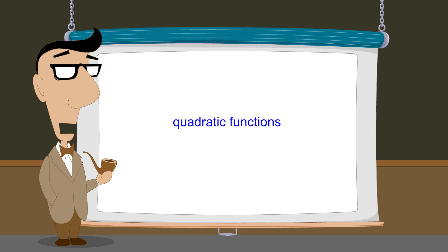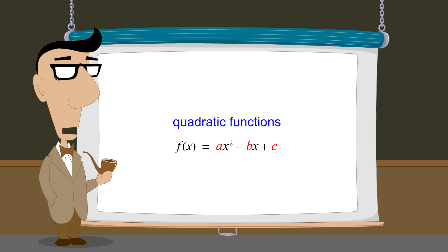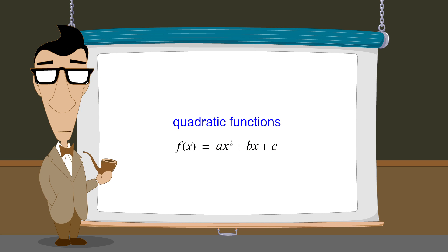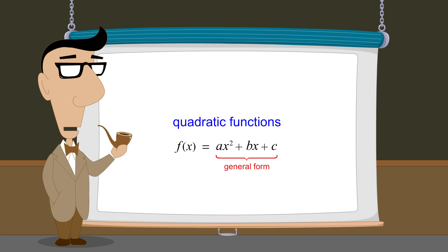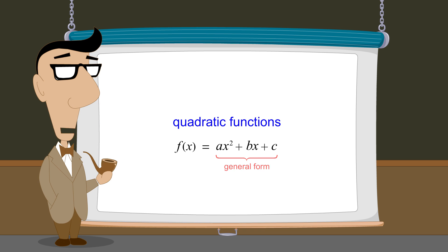Any quadratic function of x can be written as ax-squared plus bx plus c, where a, b, and c are constants that determine the shape and position of the function's graph. We will refer to this form of a quadratic function as the general form. Let's see how in general form the constants a, b, and c affect the function's graph.